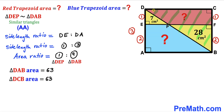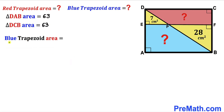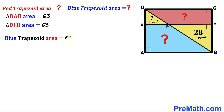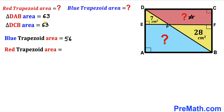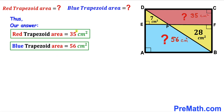Triangle DAB has area 63 cm². The area of the blue trapezoid equals the triangle DAB area minus the triangle DEP area: 63 − 7 = 56 cm². The area of the red trapezoid equals triangle DAB area minus triangle PFB area: 63 − 28 = 35 cm². So the red trapezoid is 35 cm² and the blue trapezoid is 56 cm².